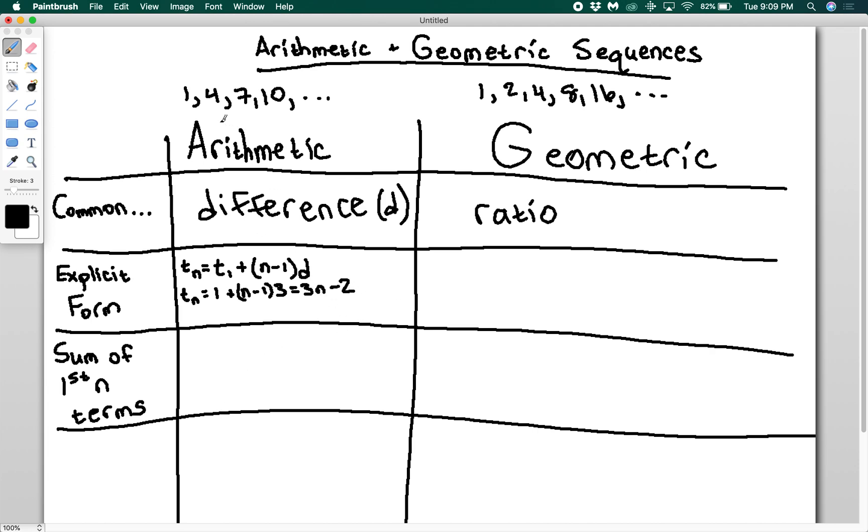And if we check this, we can plug these in. 1 times 3 minus 2 is 1. 2 times 3 is 6 minus 2 is 4. 3 times 3 is 9 minus 2 is 7. So this successfully generates the term that we want. This top line here is our equation to generate an explicit form.